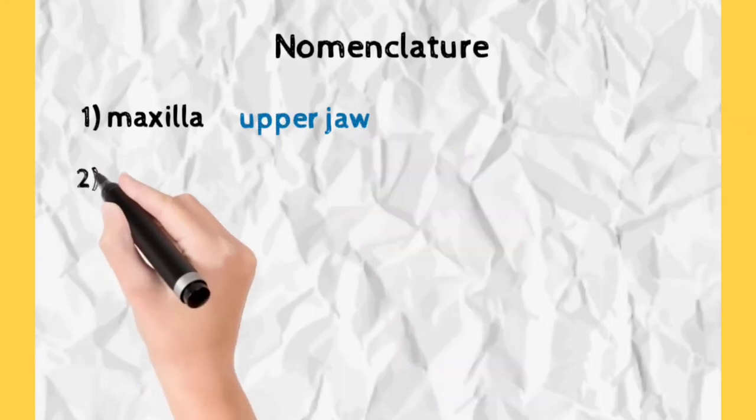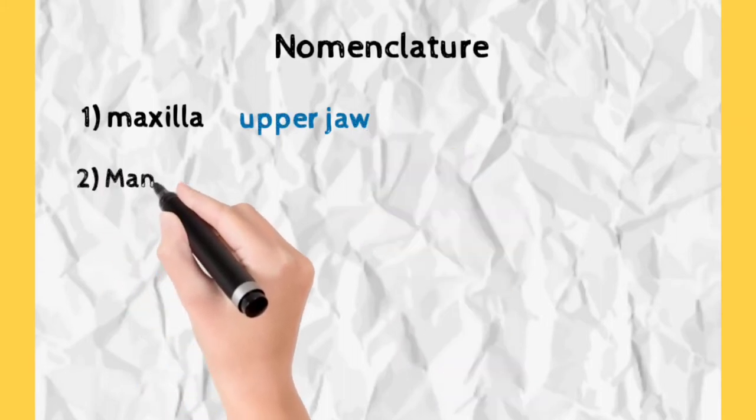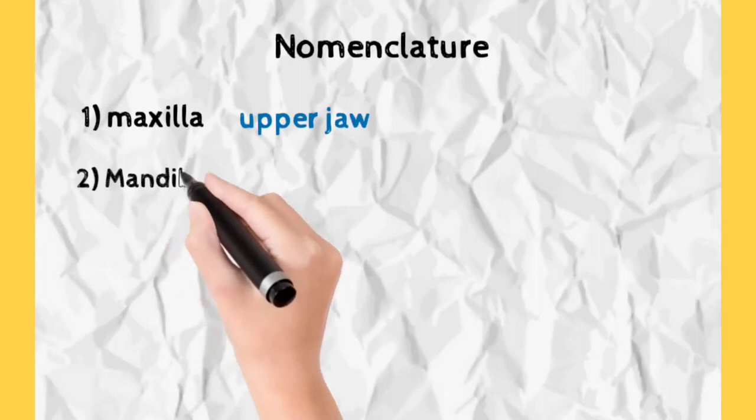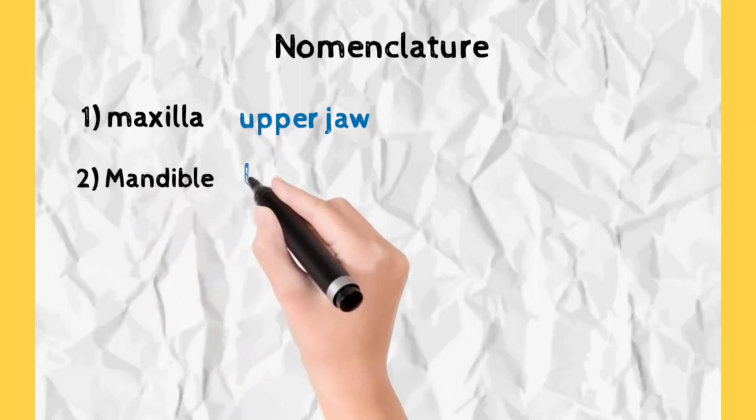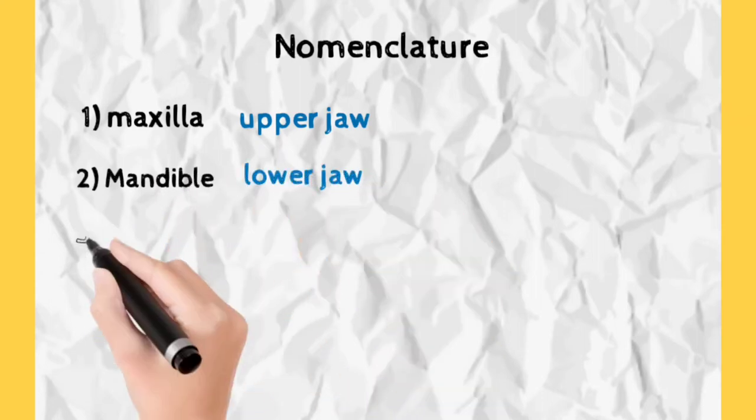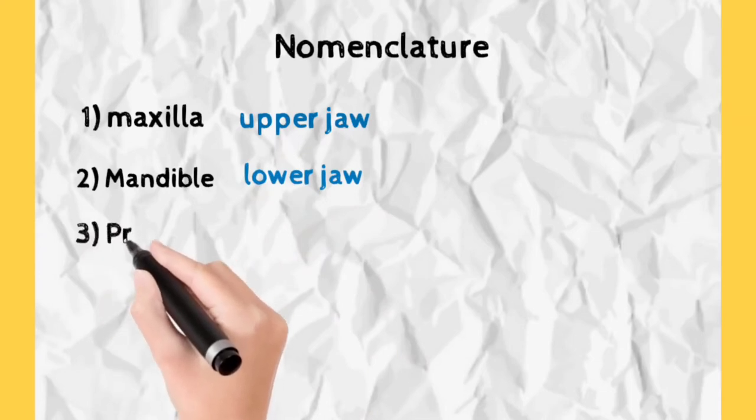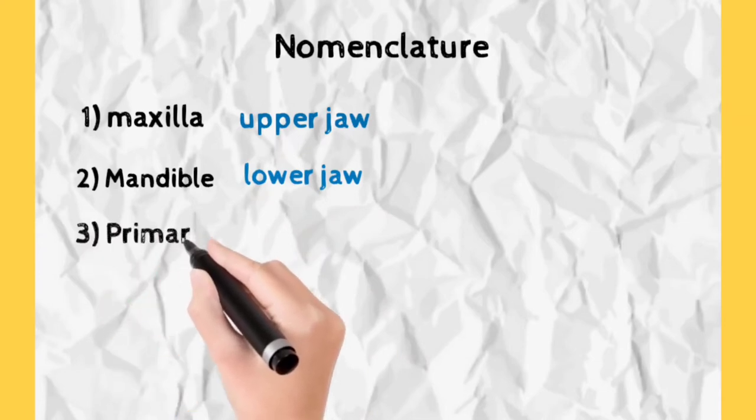Second is mandible. Our lower jaw is known as mandible, the movable jaw which we use for chewing. Also note the fact, maxilla is immovable while mandible is movable.